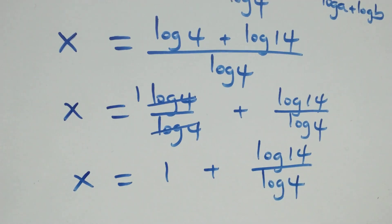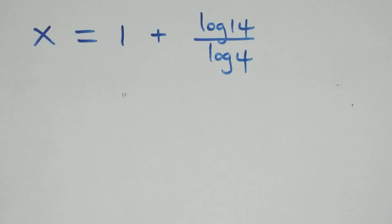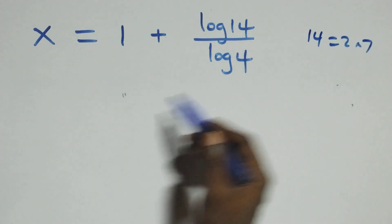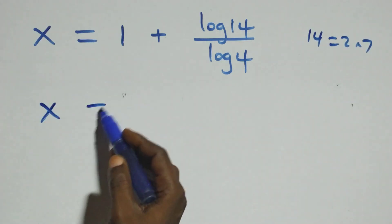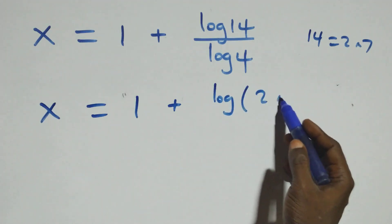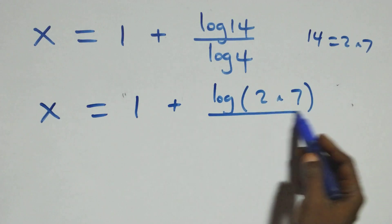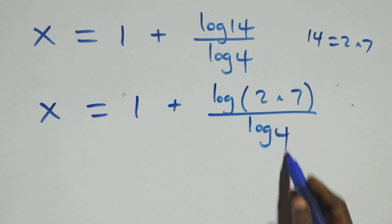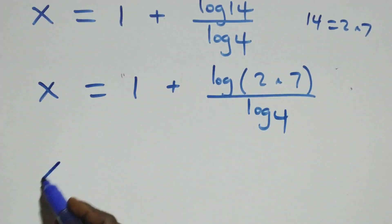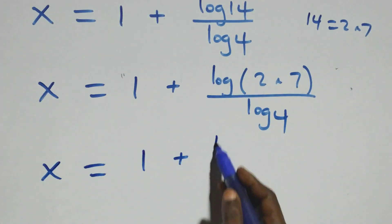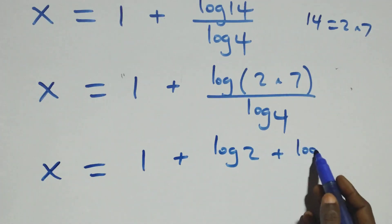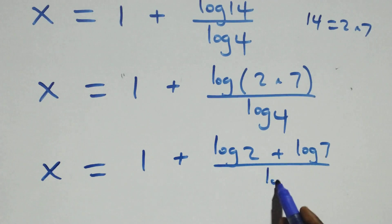Then, next step, we can express 14 as 2 times 7. So what we have becomes x equals 1 plus log of 2 times 7, all over log 4. This also follows the logarithm product rule, and we have x equals 1 plus log 2 plus log 7, all over log 4.